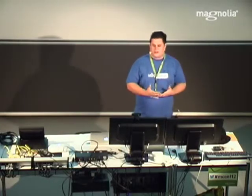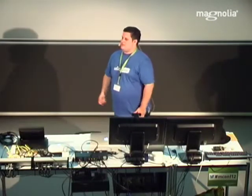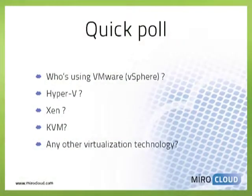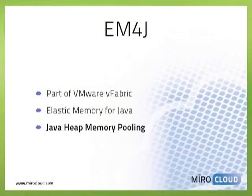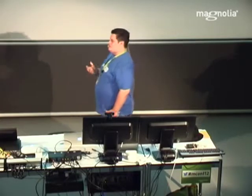One of the big advantages of virtualizing is actually to share memory across virtual machines. Have you ever heard about VMware vFabric? VMware vFabric is a set or collection of products, and one feature from a product called Elastic Memory for Java is what we're interested in. The key here is Java heap memory pooling.